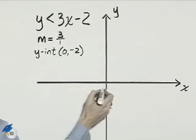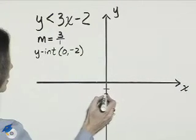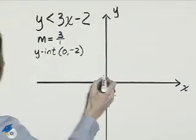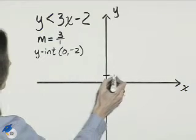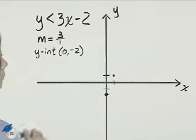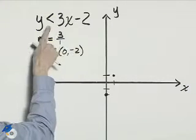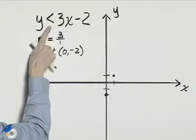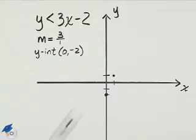We place (0, negative 2) on the y-axis, then counting up 3 and to the right 1 gives us another point. We connect those with a straight edge, remembering that this will be a broken line because this is strictly less than.